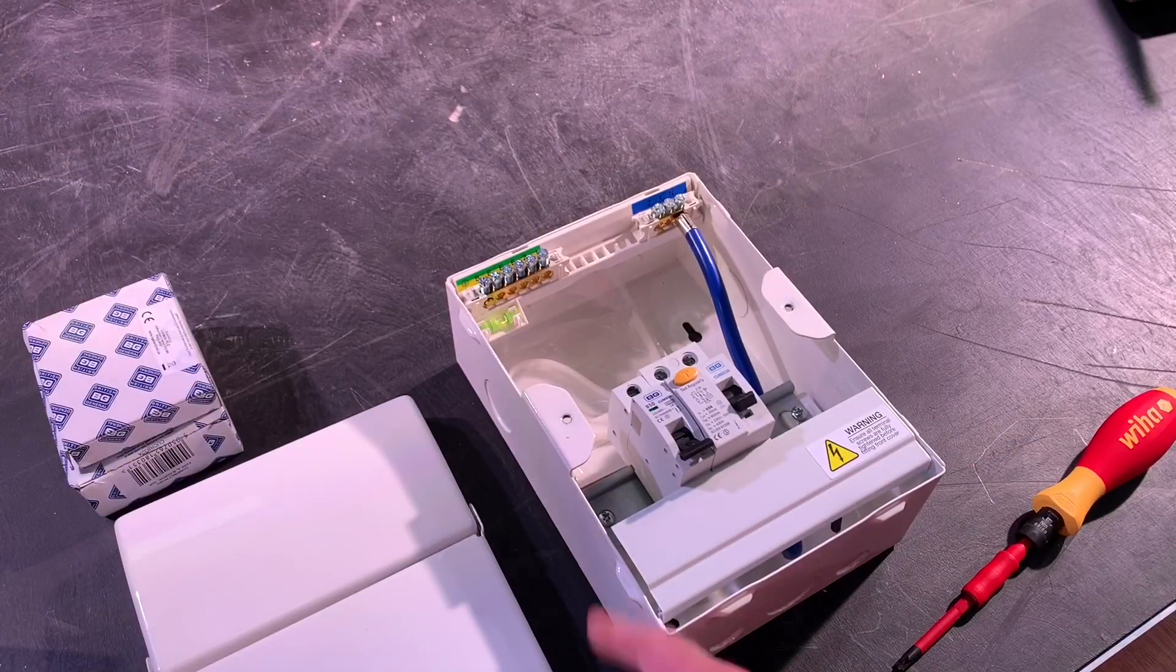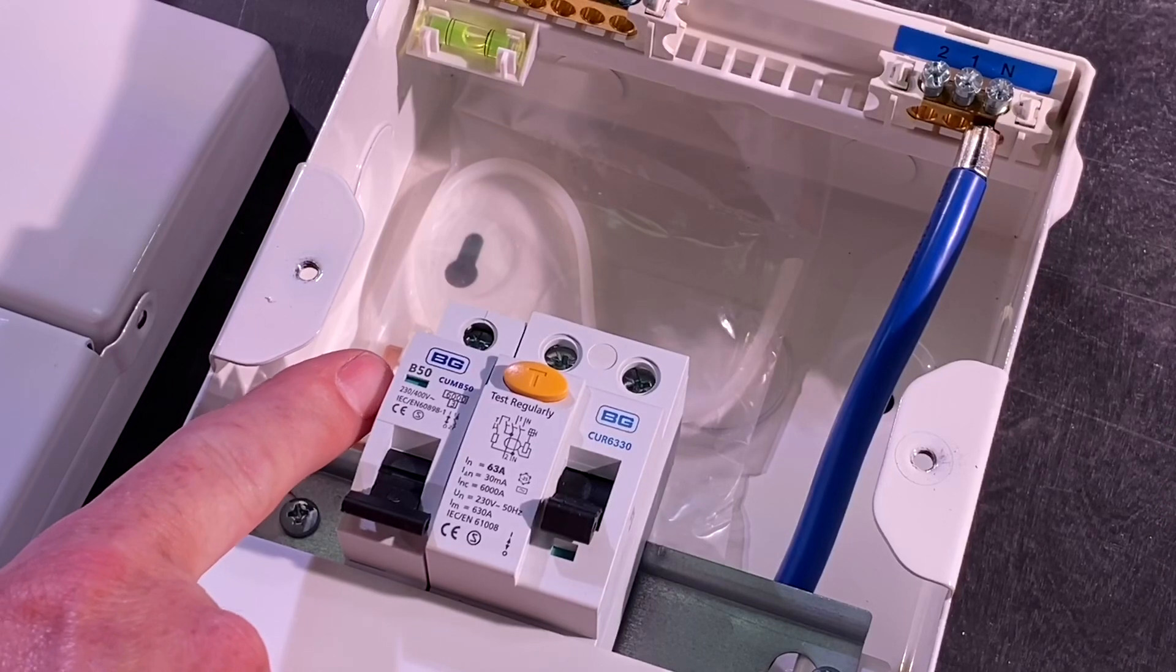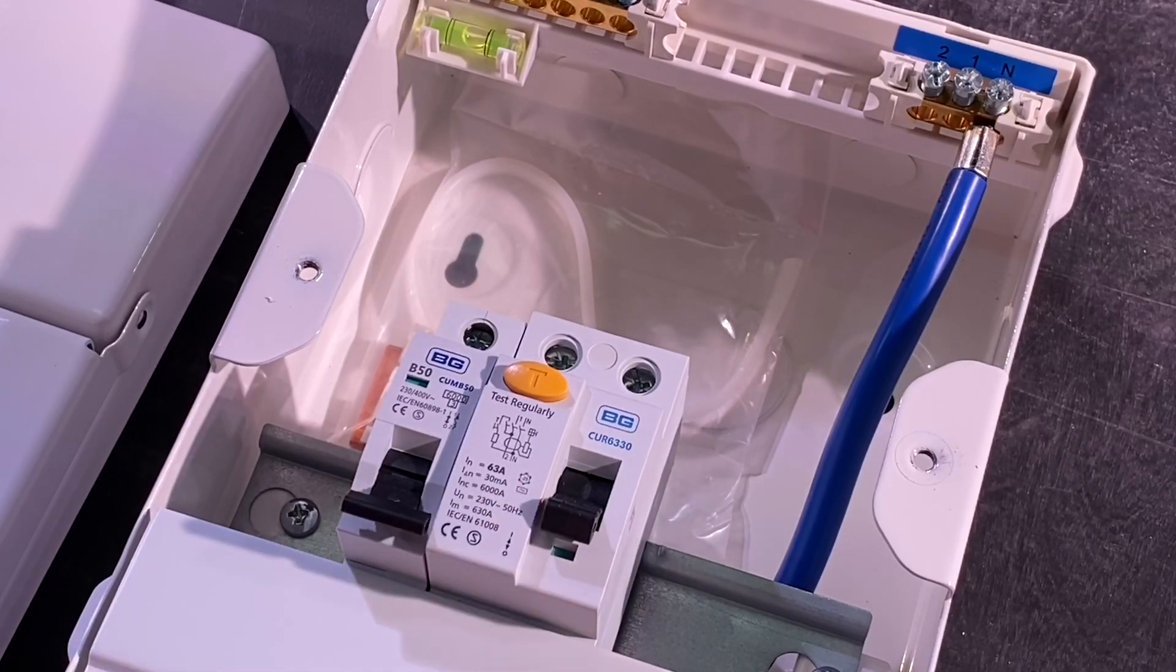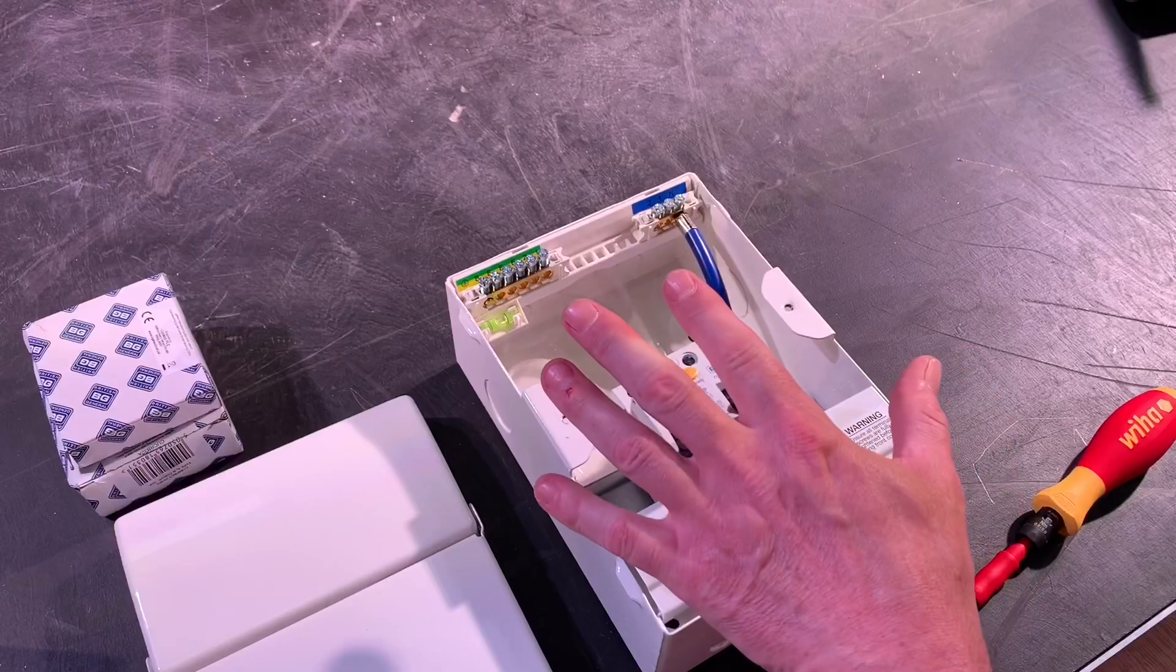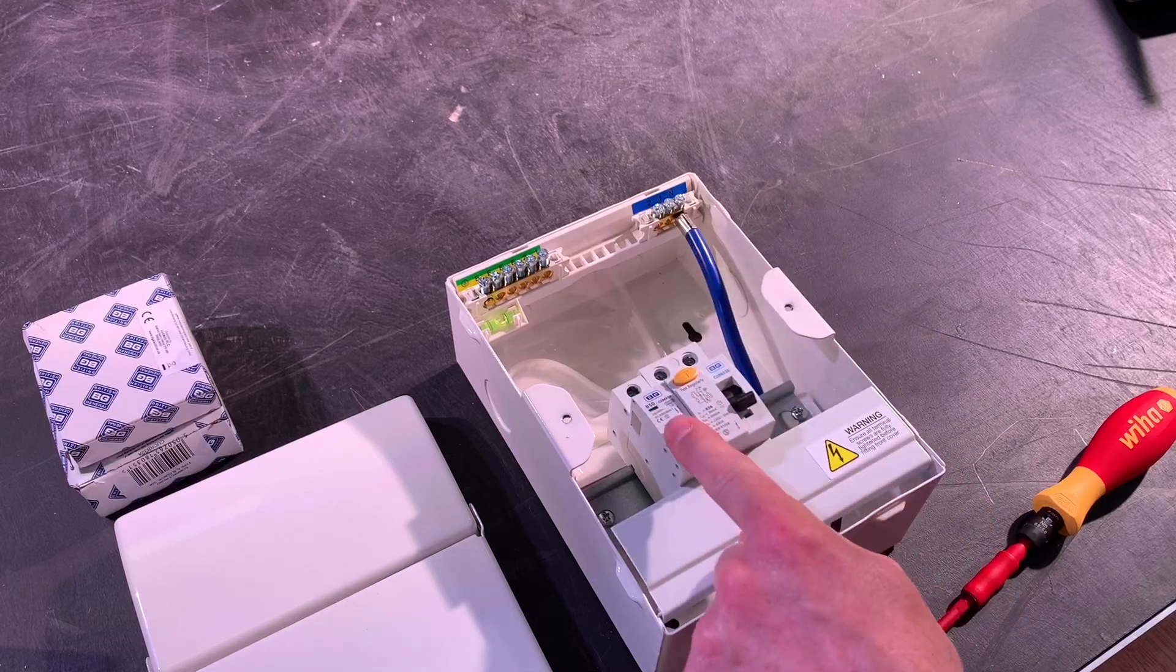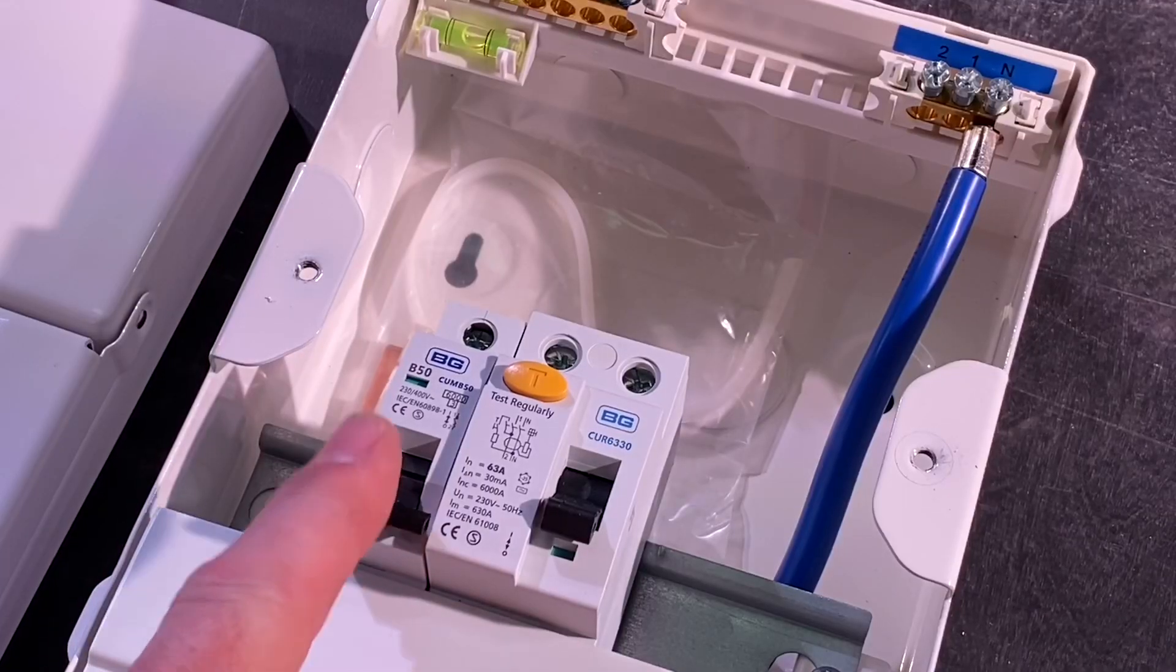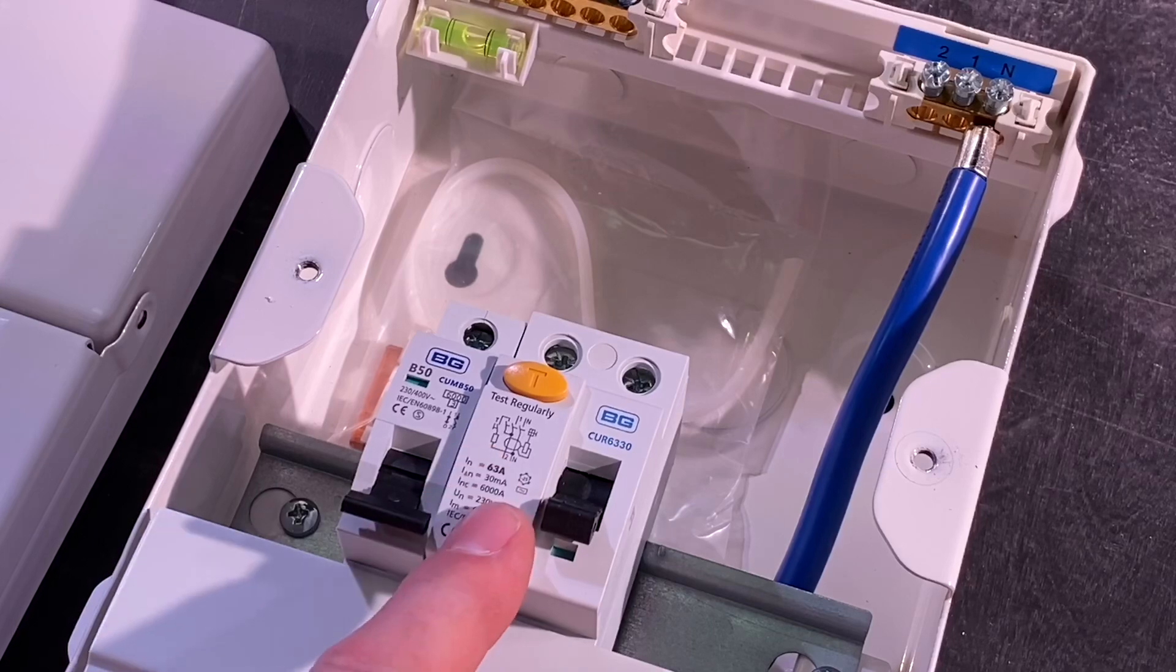We've got a B 50 amp circuit breaker provided with the consumer unit. The RCD is rated at 63 amps, 30 milliamps and is an AC type. Just stop you there, just remember that the shower itself is a resistive load and an AC RCD is totally acceptable.